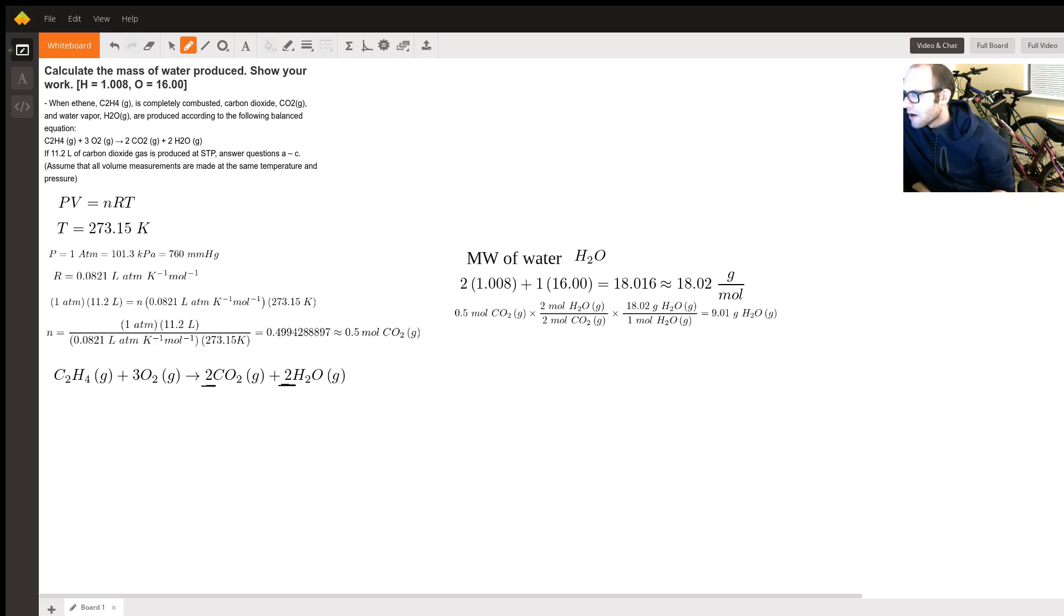So the first clue to using the universal gas law, PV equals NRT, you would want to use that in this equation because all of the reactants and products are in the gas phase and they're giving you the amount of carbon dioxide, the product, and they're expressing it in volume.